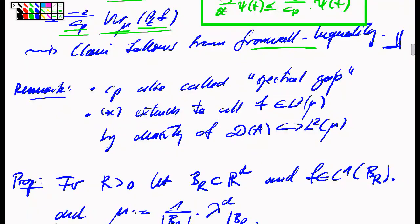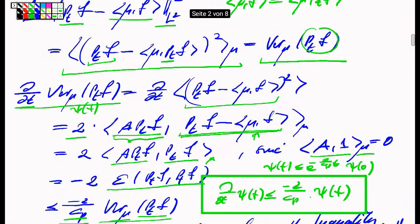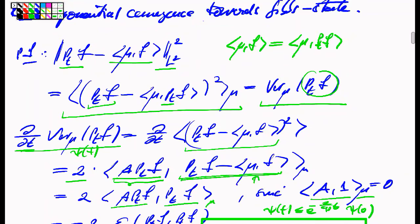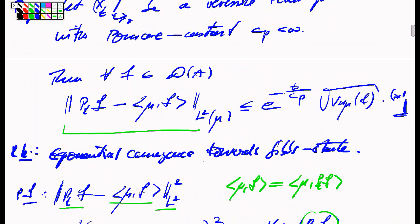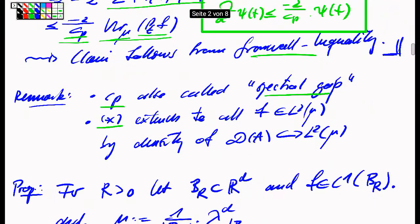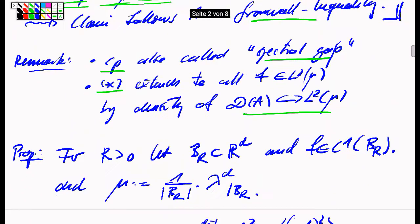A few more remarks: CP is called the Poincaré constant, sometimes also called the spectral gap, because it gives a lower bound on the first non-trivial eigenvalue of the operator A. The inequality regarding decay of variance, by a simple approximation argument, is correct not only for all functions in the domain of the generator, but also for general functions in the L2 space, since the domain of the generator is dense in that L2 space.